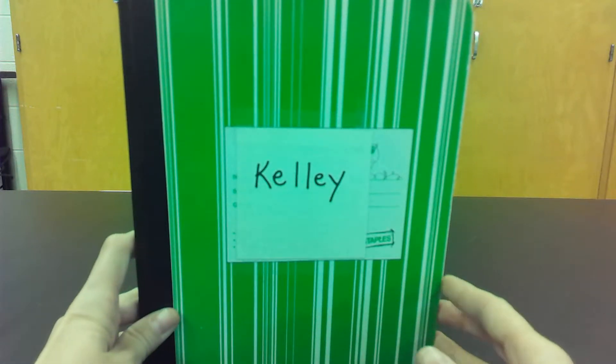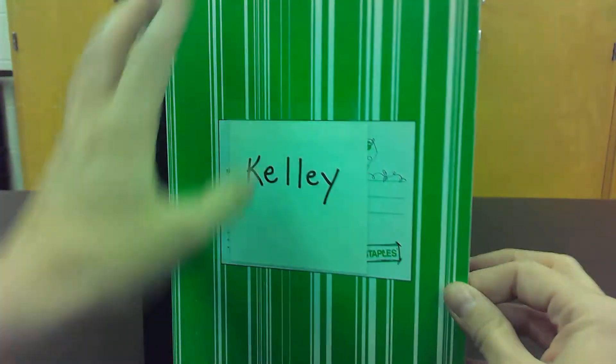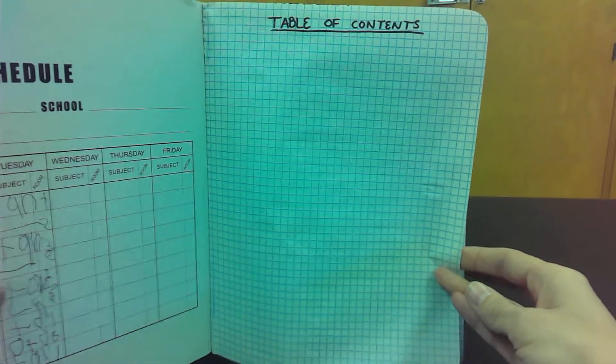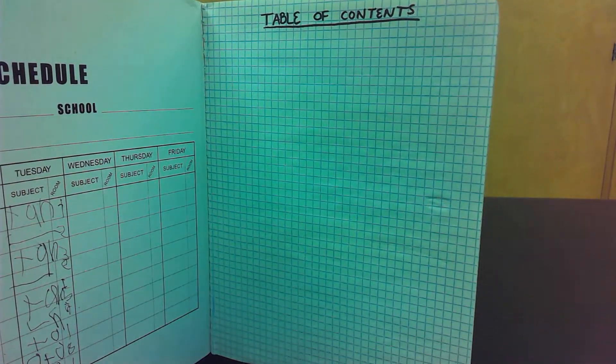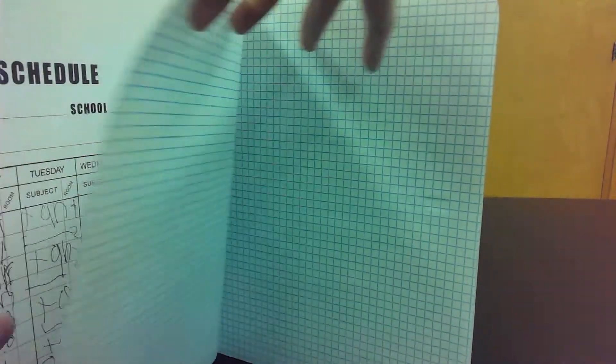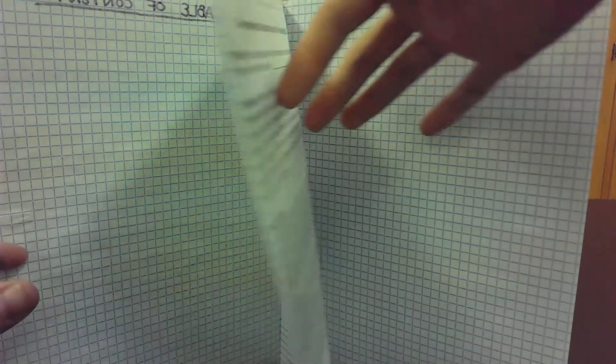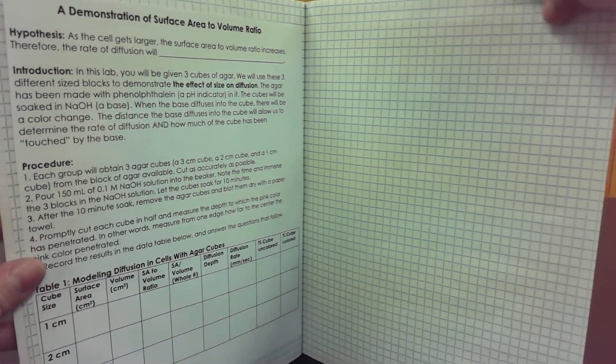The first page that you open needs to be a table of contents. And then you're gonna skip a page, so the inside two pages here will be blank.